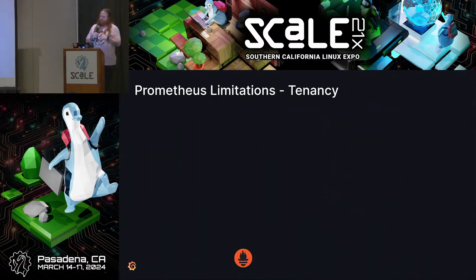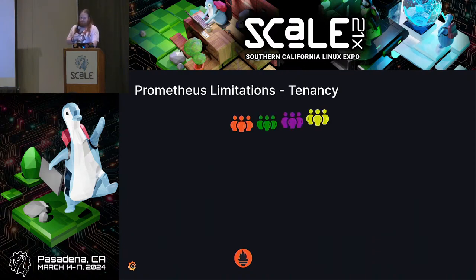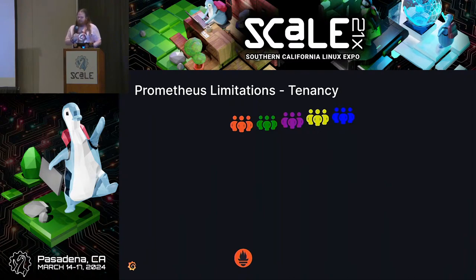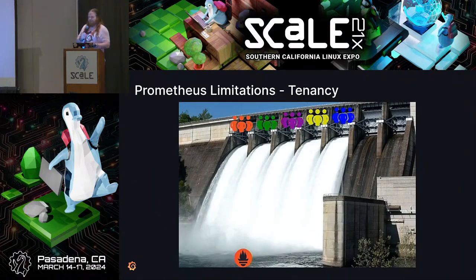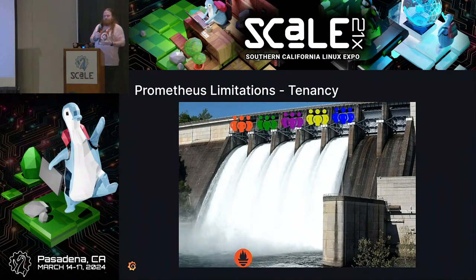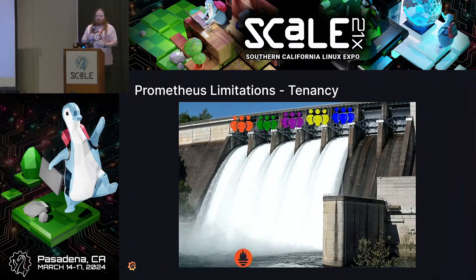The next limitation is around tenancy. You might have teams one through five at your company all getting metrics sent into the same Prometheus server, but there's no segregation and no limits. It's either on or it's off. You're effectively operating with open floodgates all the time, pouring all these metrics into one server. This means you can easily run into noisy neighbor situations — one team blows up the amount of metrics being sent, and now everyone else suffers and they knock the whole thing over.